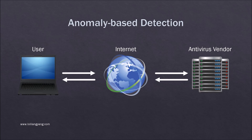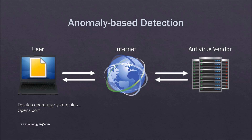Another form of antivirus system is anomaly-based detection. This type of detection technique checks the running program for patterns of behavior, gathering information about the inspected process to find odd behavior. If the user downloads a malicious file, instead of checking the file against a list of known viruses, it checks what the attachment does to the computer. If the file starts automatically deleting operating system files, opens ports, or performs any other malicious activity, the attachment will be flagged and quarantined.